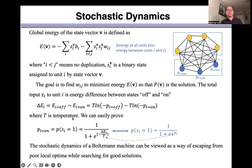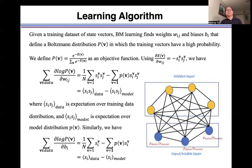Where T is temperature. We can easily prove probability when state is on, which is a sigmoid function compared with the sigmoid function defined before. This energy difference is the same as the total input to unit i. The stochastic dynamics of Boltzmann machine can be viewed as a way of escaping from local optima when searching for good solutions.